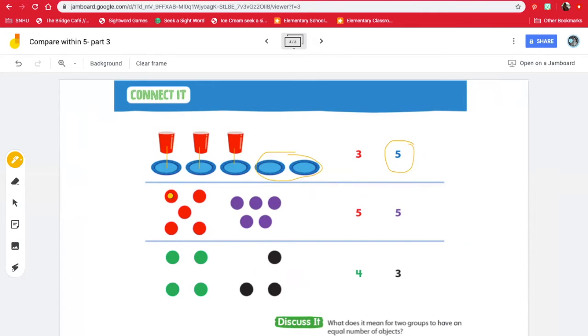Let's count the dots. One, two, three, four, five. There are five red dots. How many purple? One, two, three, four, five.